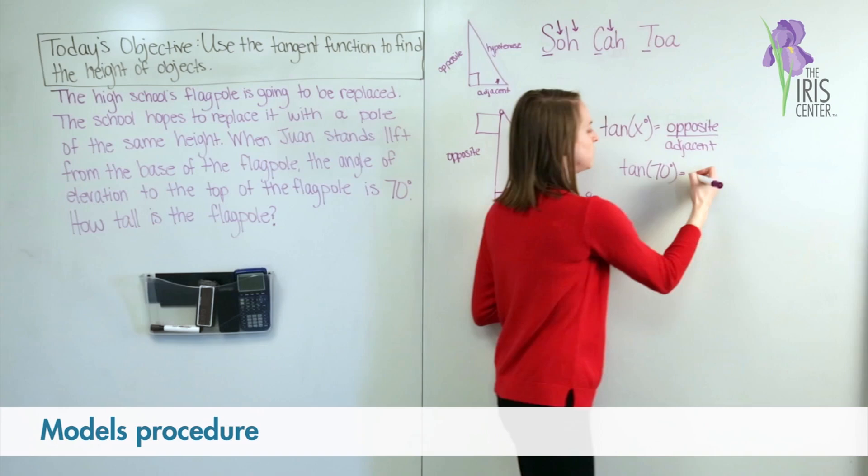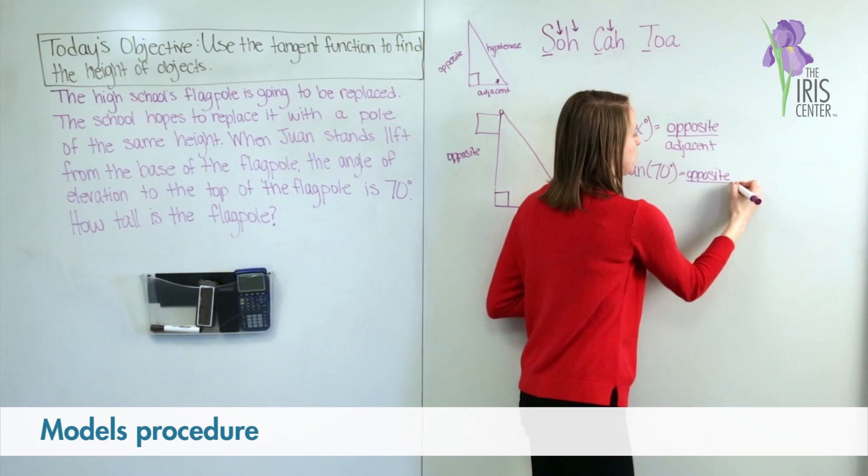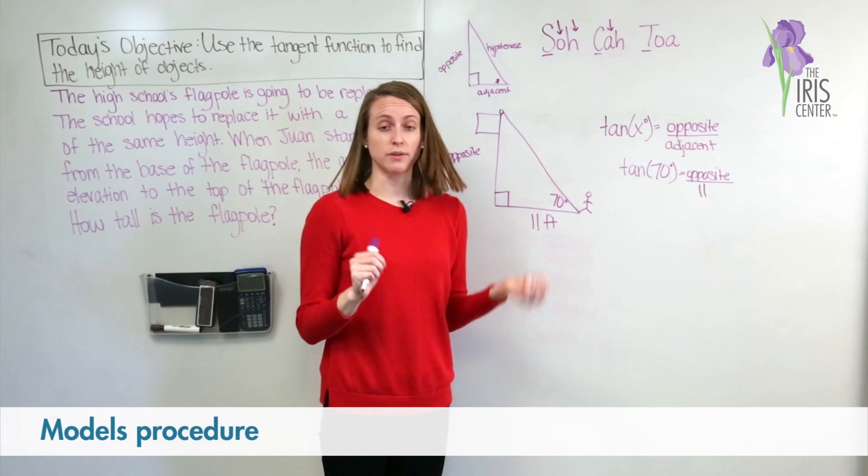So the tangent of 70 degrees equals the opposite — I don't know what the opposite side is, so I'm just going to leave in the word opposite — over the adjacent side. I notice my side adjacent to the 70 degree angle is 11 feet, so I can write 11 right there.